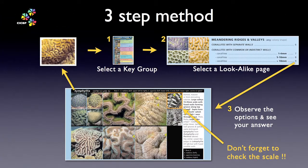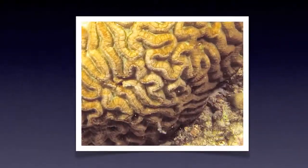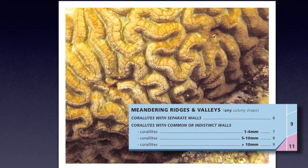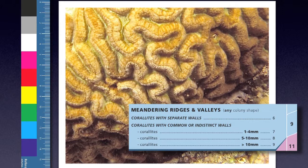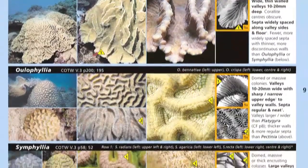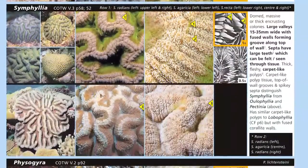So let's review the Coral Finder's three-step ID process. Step 1: choose a key group. Clearly there is a meandering texture on the colony surface, so let's give that a try. Step 2: choose a lookalike page. The walls are common, and using the scale bar on the Coral Finder's inside back page, we know that the valleys are greater than 10mm in diameter. Finally, scan the lookalike page, comparing and contrasting the options. Symphilia looks good.